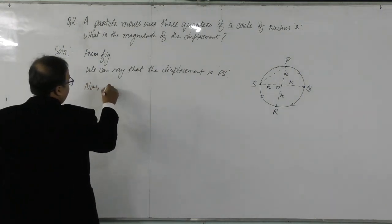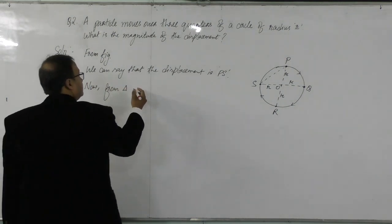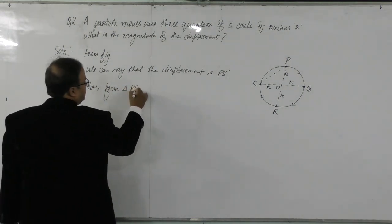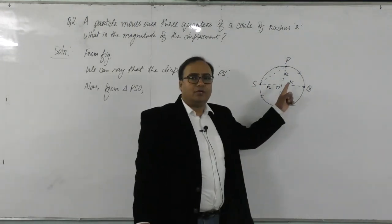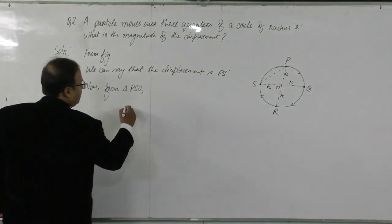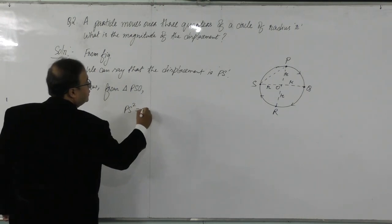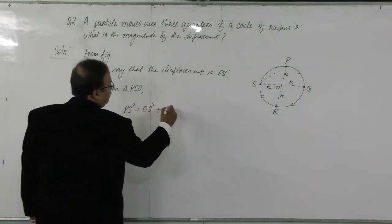Now, from triangle PSO. In this triangle PSO, if we apply Pythagoras theorem, we will get PS square is equals to OS square plus OP square.